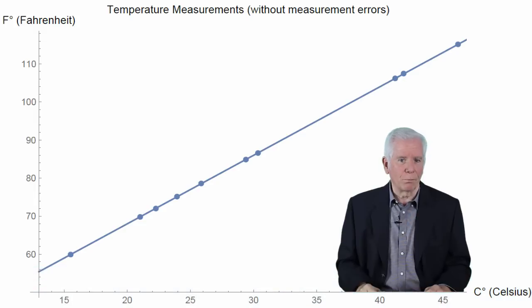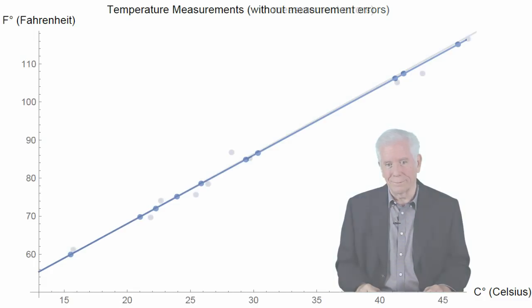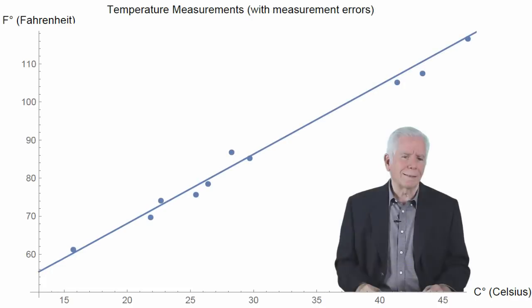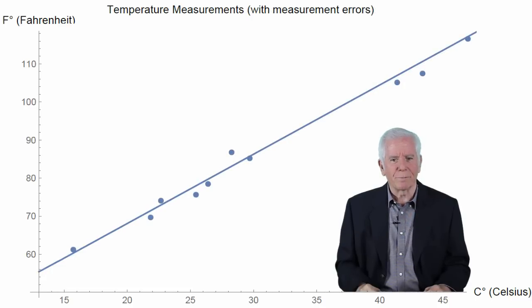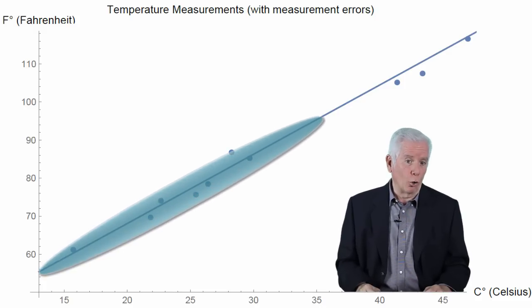Actual measurements would most likely contain measurement errors. Therefore, the true scatter of the points would more realistically look like this. Let us summarize what we see here. Although the points do not align exactly on a straight line due to measurement errors, it is obvious that there is a linear relationship between the measurements on the two scales.